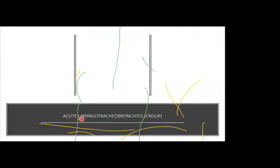Now let's look at acute laryngotracheobronchitis (LTB), also called croup. Breaking down the term: 'laryngo' refers to the larynx, 'trachea' refers to the trachea, 'bronch' refers to the bronchus, and 'itis' means inflammation. So all of these airway tracts are inflamed and swollen. Croup is a type of respiratory infection affecting the larynx and trachea caused by a virus.